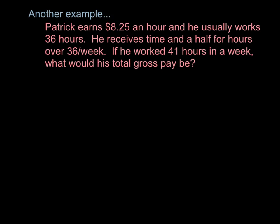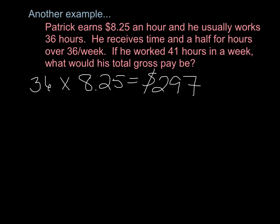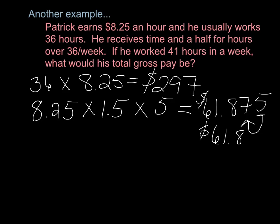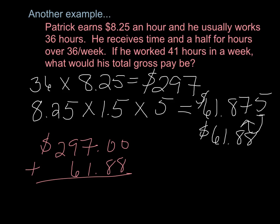Here's another example. Patrick earns $8.25 an hour and he usually works 36 hours. He receives time and a half for hours over 36 per week. If he worked 41 hours in a week, what would his total gross pay be? 36 hours times $8.25 gives us $297.00. $8.25 times 1.5 times 5 overtime hours gives us $61.875. That 5 tells us we need to round up, so we have $61.88. Add these two numbers together and you get $358.88.